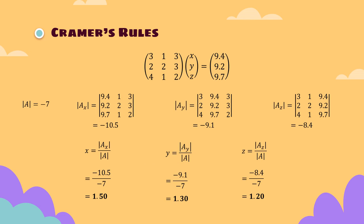To find the value of X, Y and Z, we can proceed with Cramer's rule. Since the determinant of A equals negative 7, we can proceed with this rule. For example, X equals the determinant of AX divided by the determinant of A. Thus, we will get X equals to 1.25. We also apply these rules to Y and Z. Thus, we will get Y equals to 1.3 and Z equals to 1.2.